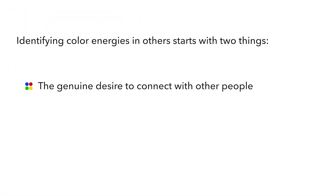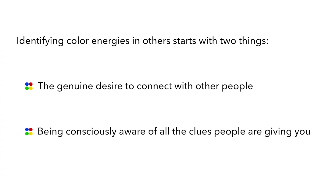You really can identify color energies in almost everyone, no matter how you are communicating with them. It all starts with two things: the genuine desire to connect with other people, and then being consciously aware of all the clues they're giving you. One of the best ways to get good at recognizing type in others is using email — it gives you the chance to pause and think about your response. Most of us have 50 or 100 opportunities to recognize type in all the emails we receive and send every day. We all have hundreds of opportunities every single day to recognize type in others, with a goal of adapting our style to connect better with them. It's the most actionable part of using the discovery color energies.